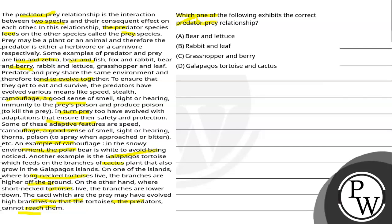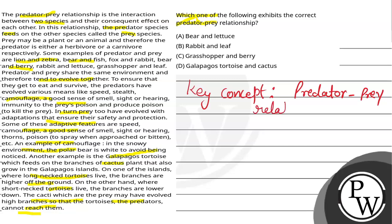Let's discuss the key concept here: predator-prey relationship. In any environment or ecosystem, there is interdependence of organisms — organisms interact with one another. It becomes a biotic or abiotic factor in the particular environment. They interact with each other for various things like shelter and food.